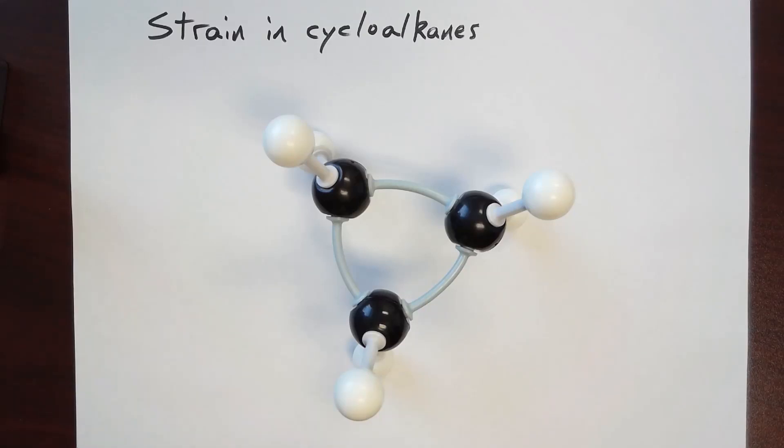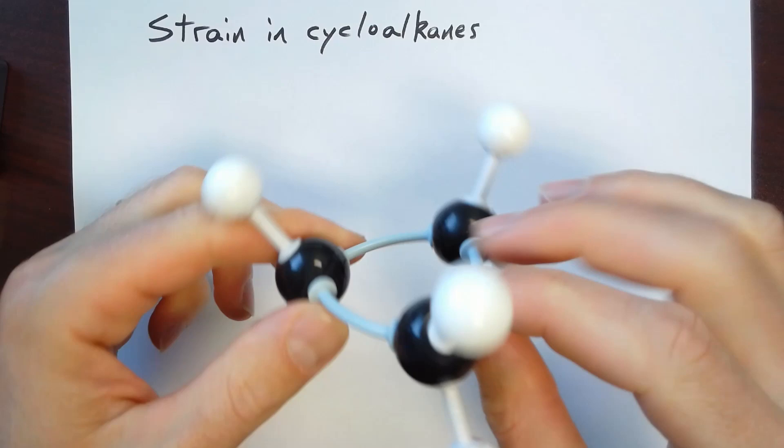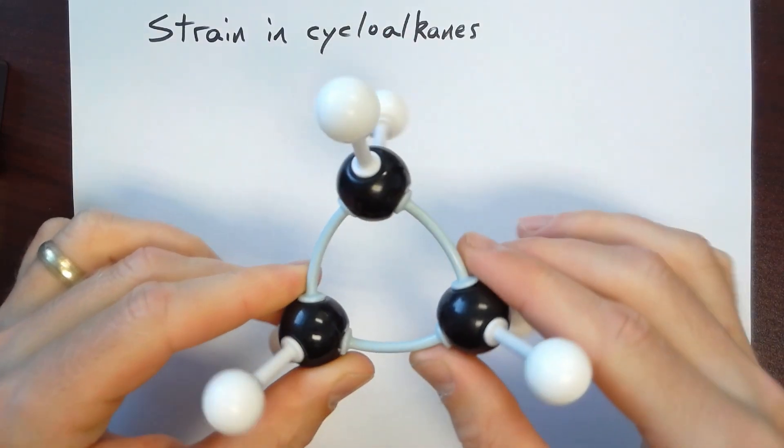We're going to be learning about the conformational isomers of cycloalkanes in the next lecture. And cycloalkanes have additional components to their strain, and you can actually see that here with cyclopropane.